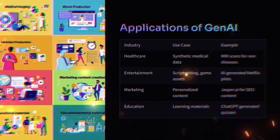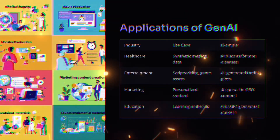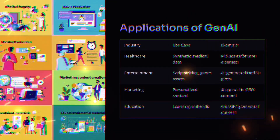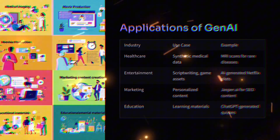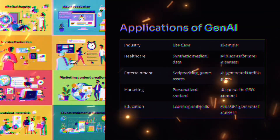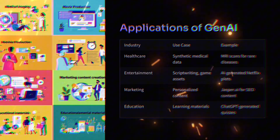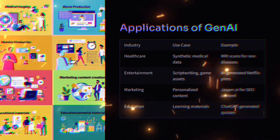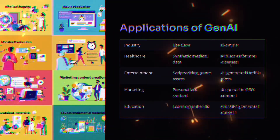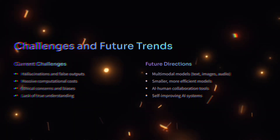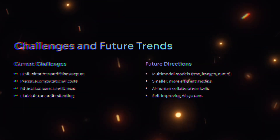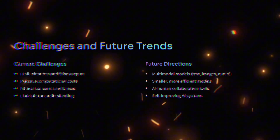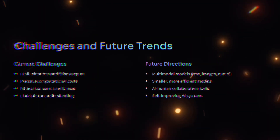Applications of generative AI span many industries. In healthcare, it generates synthetic medical data like MRI scans for rare diseases. In entertainment, it assists with script writing, game assets, and AI-generated Netflix plots. In marketing, tools like Jasper.ai create personalized SEO content. In education, ChatGPT generates learning materials and quizzes.